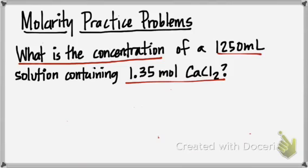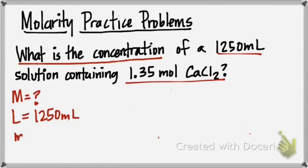So it says, what is the concentration? Well, concentration is just another word for molarity, so it's going to be my capital M. Then my volume is given to me at 1,250 milliliters. And it gives you straight out the number of moles, which is really pretty friendly, which is 1.35 moles of calcium chloride.